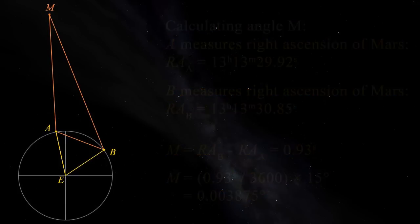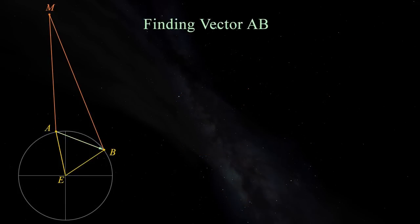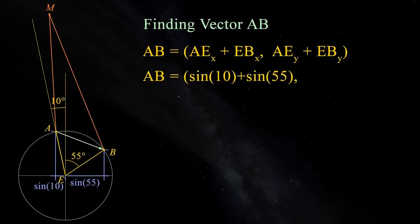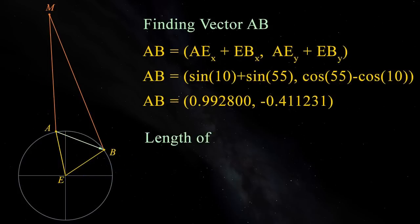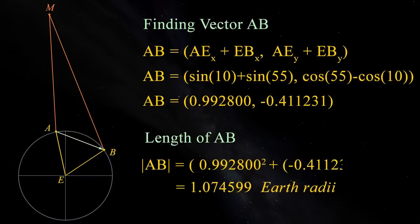Now we need a vector from Alice to Bob. We can get this by adding the X and Y components of the vectors AE and EB. If we let the lengths of our vectors be measured in earth radii, the lengths are 1. The X component of AB is then sine 10 plus sine 55. The Y component is cos 55 minus cos 10, because the vector AB slopes down from left to right. This gives vector AB as 0.992800 minus 0.411231. To get the length of the vector, we use Pythagoras theorem. So the length of AB is 1.074599 earth radii.